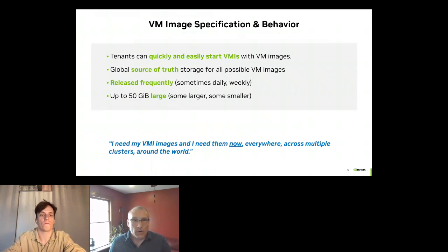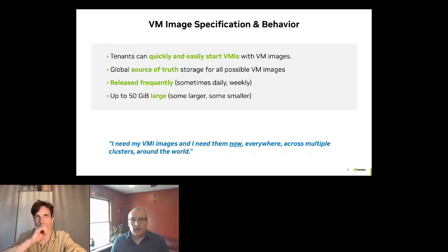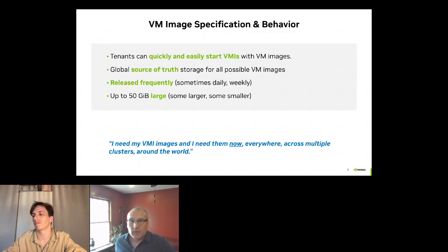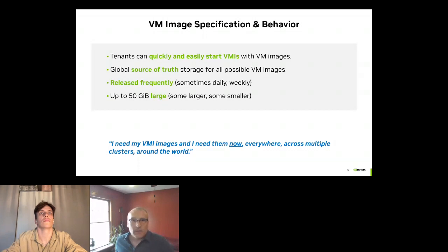One of the core specifications is that our tenants need to be able to quickly and easily start VMIs with the VM images, backed by another core spec: a global source of truth for all of the VM images in our catalog. These can be released quite frequently, sometimes daily or weekly, so we have to be able to efficiently distribute them. Many of the images are around 50 gigabytes — 20 to 50 gigabytes is what we typically see.